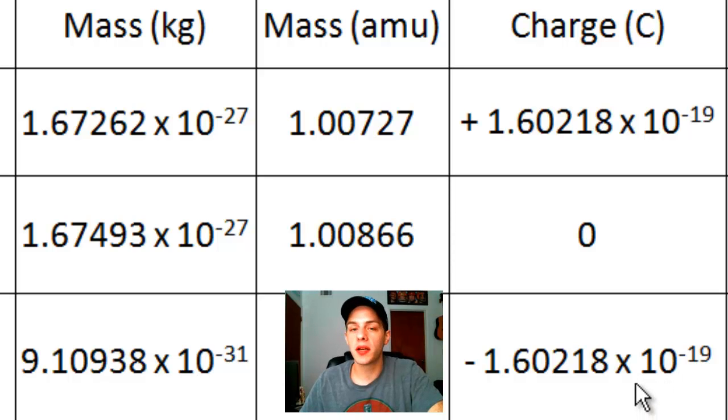So usually, protons and electrons are present in equal numbers. And this is why most matter, or all atoms, are charge neutral. So this is why when you eat a bowl of cereal, it doesn't shock you, because there's just as much protons in there as there are electrons. And they have equal but opposite charges, so they cancel each other out.